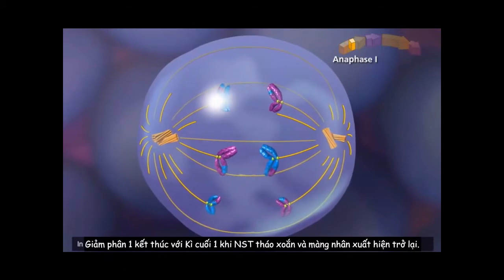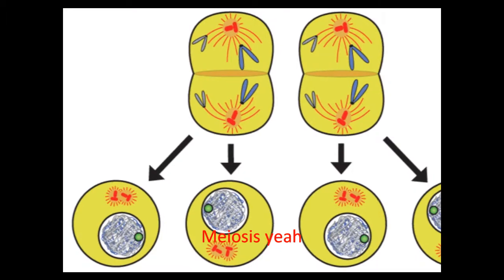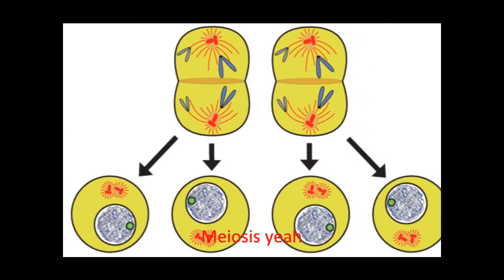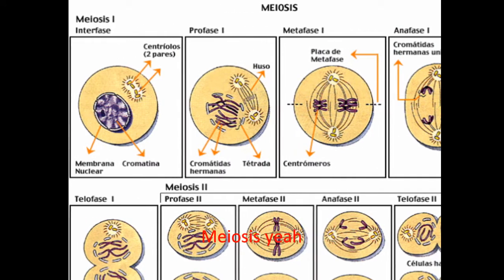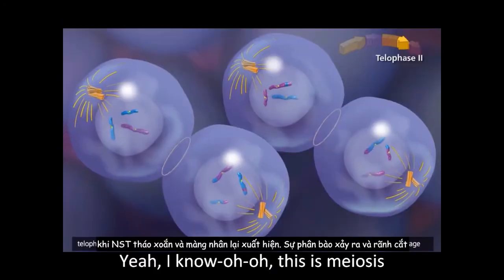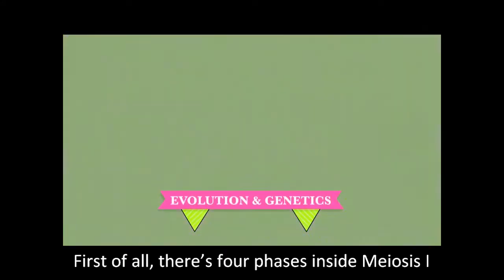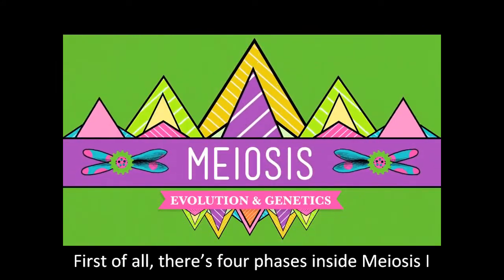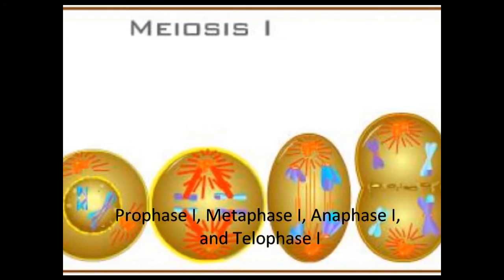Meiosis is the separation of chromosomes. There are four phases in meiosis one: prophase one, metaphase one, anaphase one, and telophase one.